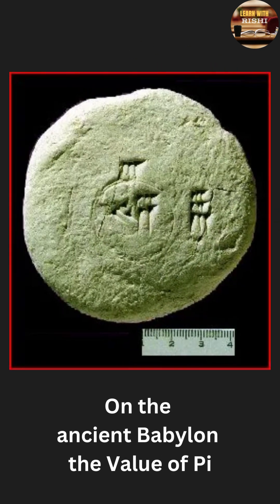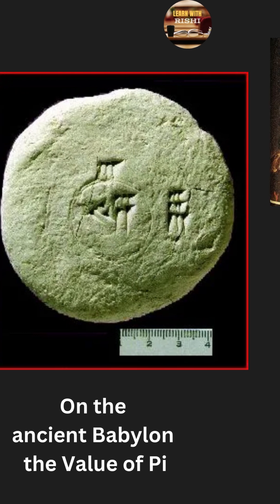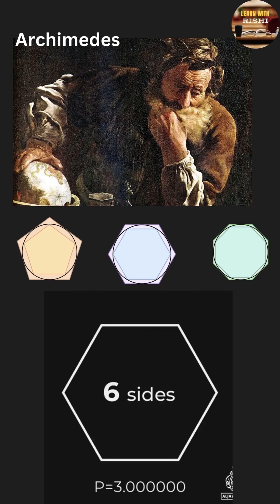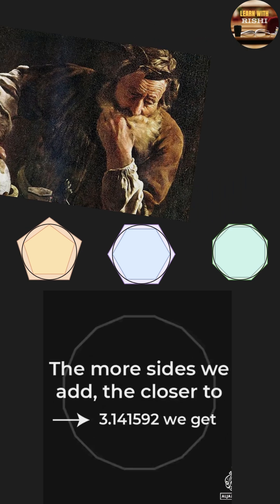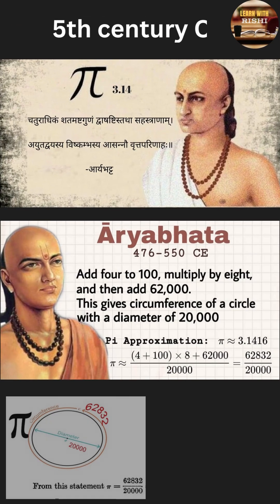The ancient Egyptians and Babylonians had explorations for Pi around 4,000 years ago. However, the Greek mathematician Archimedes made significant contributions in approximating Pi using polygons in the 3rd century BC.